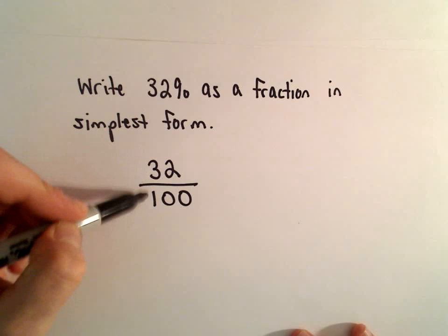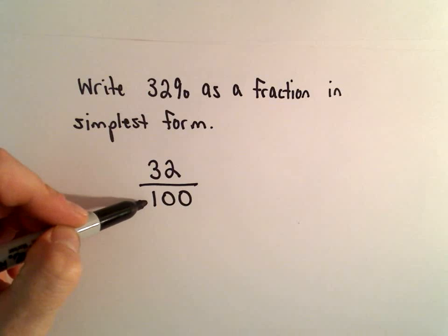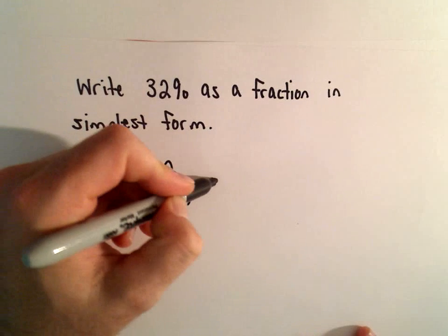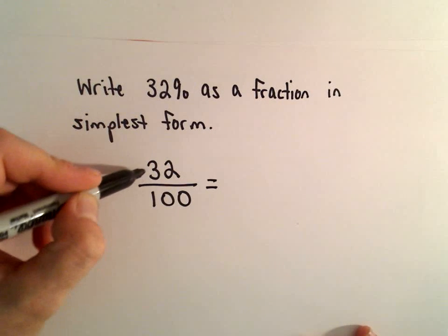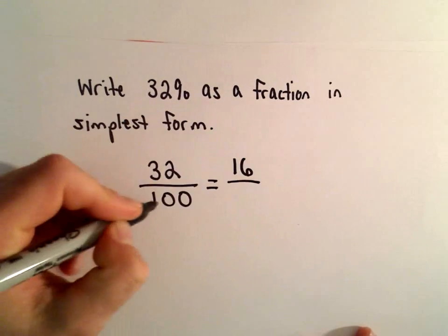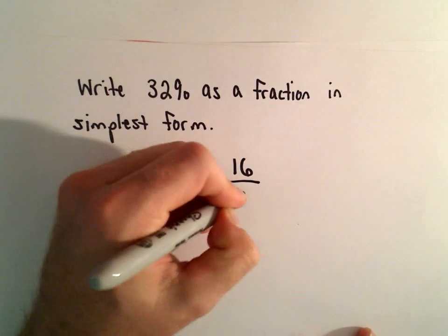Let's see, what number goes into both 32 and 100? Well, it's even, so I know 2 does at least. Let's see, 32 divided by 2 would be 16, 100 divided by 2 would be 50.